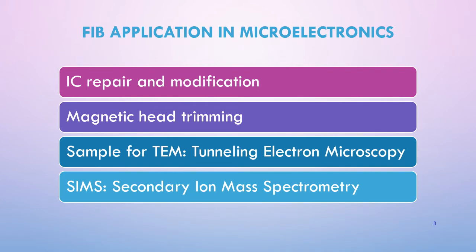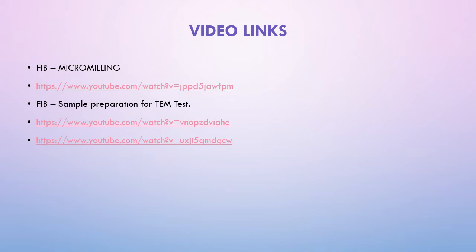In microelectronics processes, FIB can be applied in IC repair and modifications, since ICs are very small. FIB can also be used for magnetic head trimming, sample preparation for TEM (transmission electron microscopy) — where the sample must be one atom thick for microstructure analysis — and also for SIMS, which is secondary ion mass spectrometry. There are video links you can refer to for FIB micromachining and TEM sample preparation.